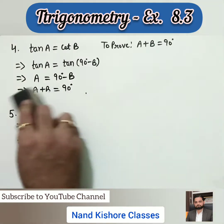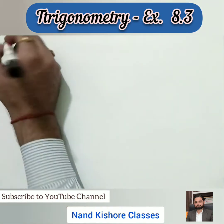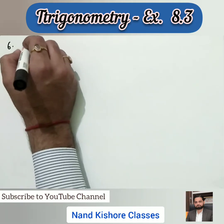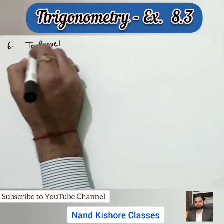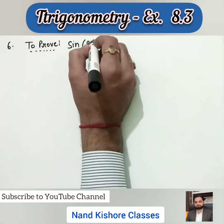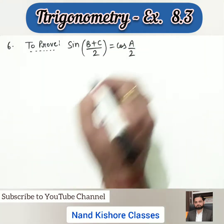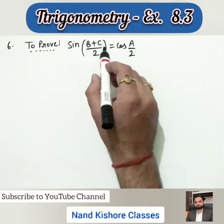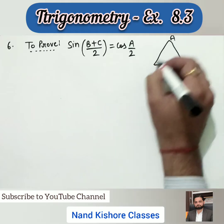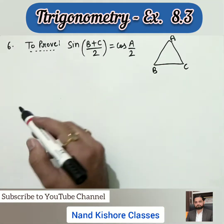Question number six is also very easy. A, B, C are the interior angles of a triangle. We need to prove that sin((B + C)/2) = cos(A/2). This question is very important from an examination point of view. A, B, and C are the vertices of triangle ABC — angle A, angle B, and angle C.